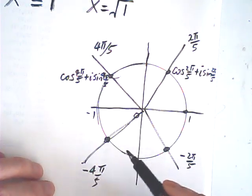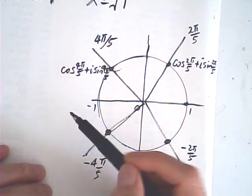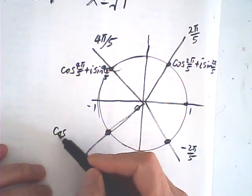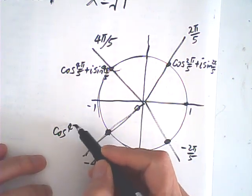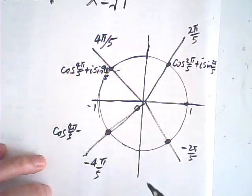This point, this point is cosine negative 4 pi over 5, because negative and positive for cosine is the same.